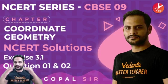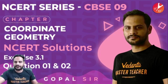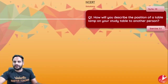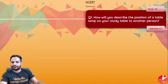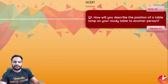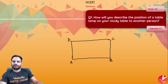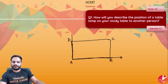The questions are very theoretical, but since we are covering all the questions of NCERT, we will be going through this part as well. So, question 1: how will you describe the position of a table lamp on your study table to another person? Suppose this is my study table — it is A, B, C, and D. What you can do is take AB as one of your axes and take AD as one of your axes.